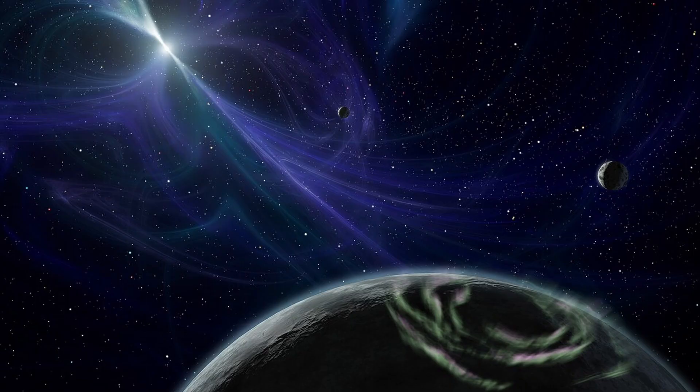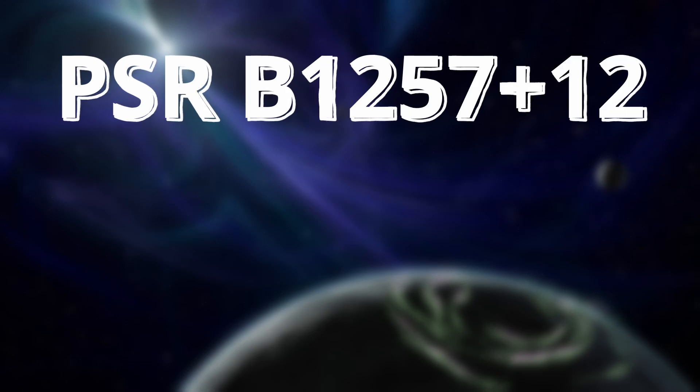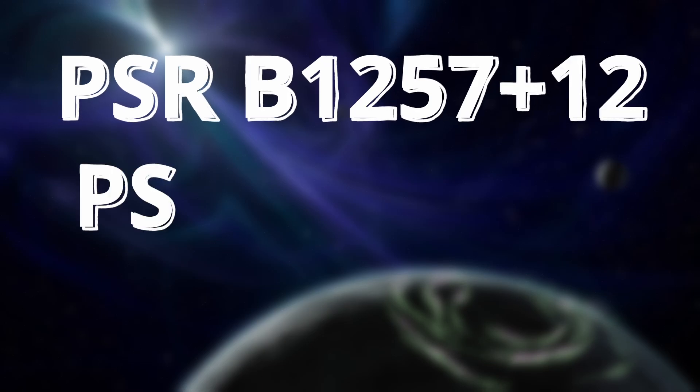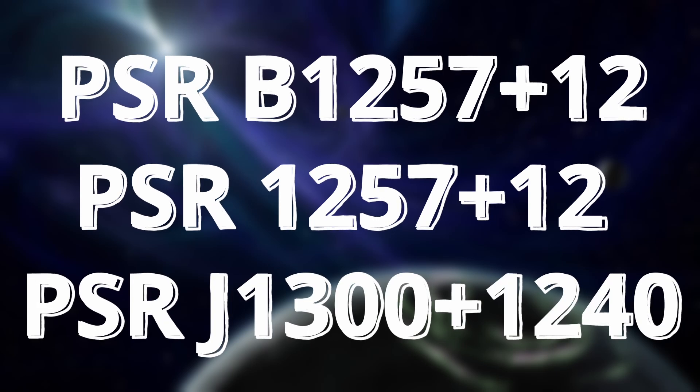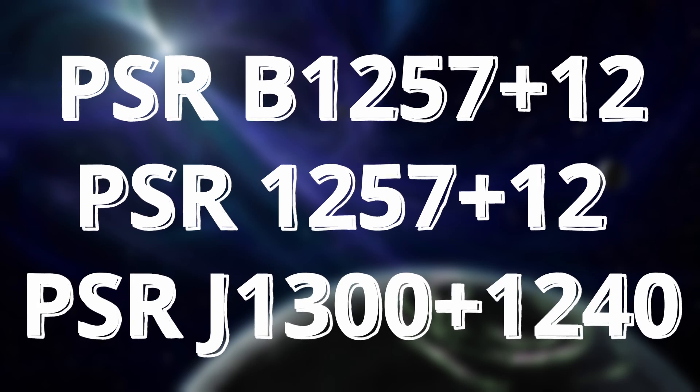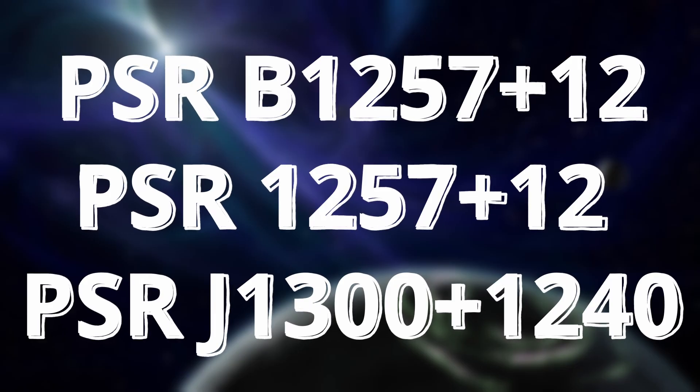These are small planets circling PSR B1257 plus 12, also known as PSR 1257 plus 12, also known as PSR J1300 plus 1240, or for me at least more memorably, LICH.